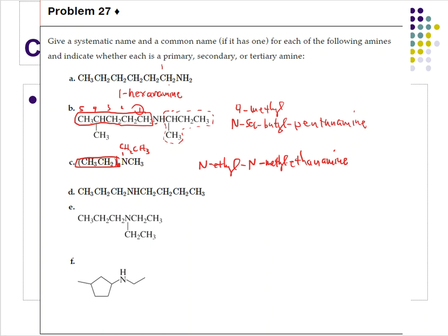For D, the longest carbon chain is one, two, three, four — a four-carbon chain. This is a butane, drop the E, add amine: butanamine. To the left on the nitrogen I have a propyl group, so this is N-propylbutanamine.